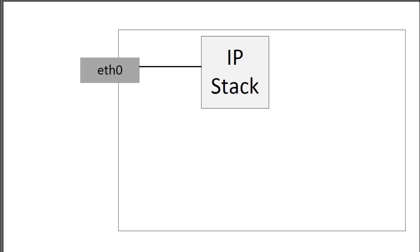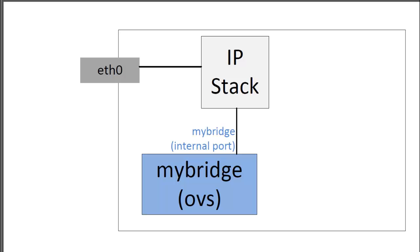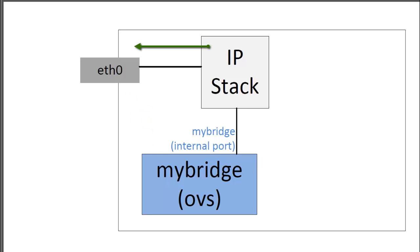Let's look at what we have now. I've added an OpenVSwitch bridge named my-bridge. At this moment my-bridge is isolated — it's not really connected anywhere but my local IP stack. In the diagram we can see that ETH0 is not connected directly to my-bridge yet. For my laptop to get to the outside network, nothing has changed yet; I still go out through ETH0.